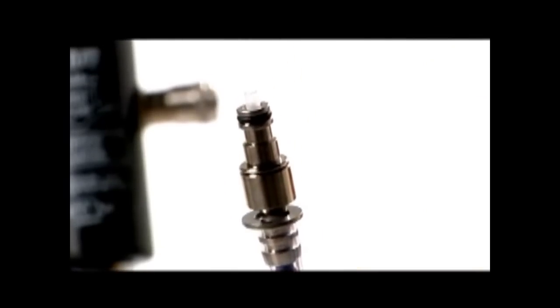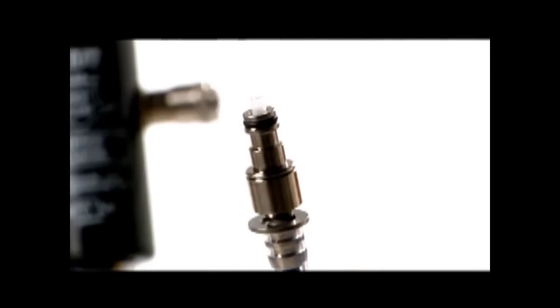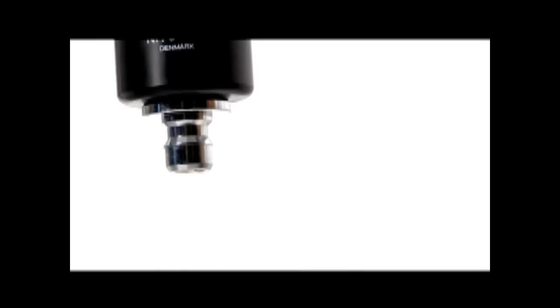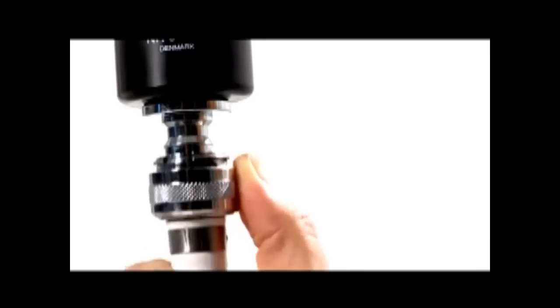The check valve ensures that chemicals are always present in the hose. This means that the unit immediately sprays out the correct chemical concentration. Fit the outlet hose to the bottom of the dosage unit.